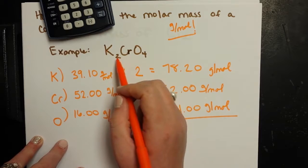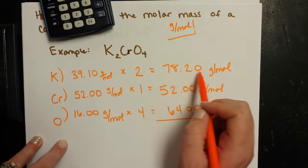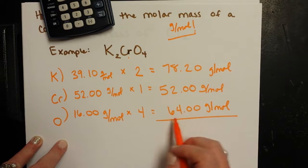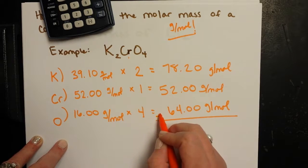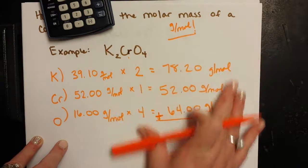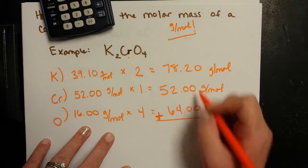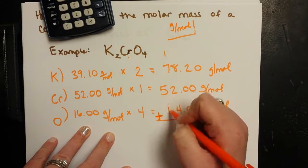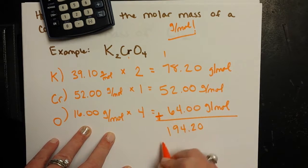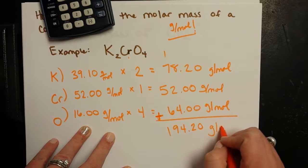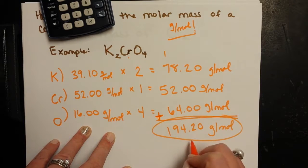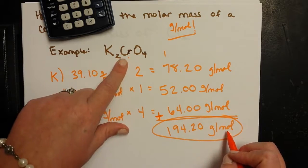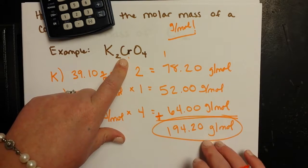So for potassium chromate, 78.20 grams per mole come from potassium, 52 grams per mole come from chromium, and 64 grams per mole come from oxygen. So the total, once I've done that, I just set it up like a nice pretty addition problem and add up my numbers. So I've got, that's 12, 19. So 194.2 grams per mole. This is the molar mass of potassium chromate, meaning if I have one mole of potassium chromate, it should weigh 194.2 grams.